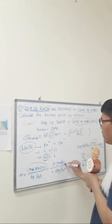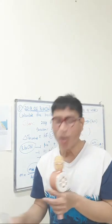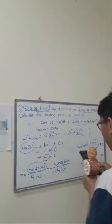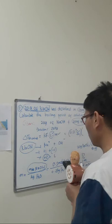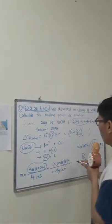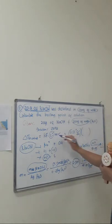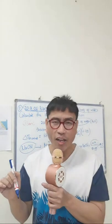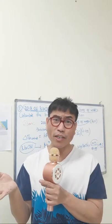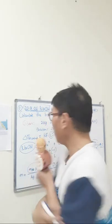So the molality is 0.5 moles divided by 0.2 kg, which equals 2.5 molal. The unit 'molal' is small letter m — sometimes the problem will say 'molal' instead of 'moles per kilogram of solvent,' but it means the same thing. So our molality is 2.5 molal.